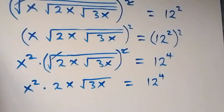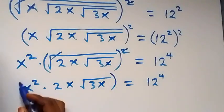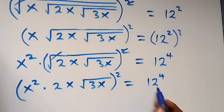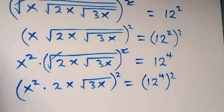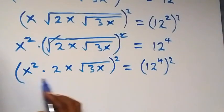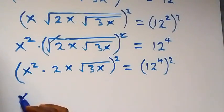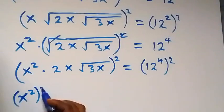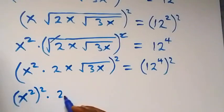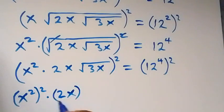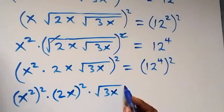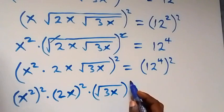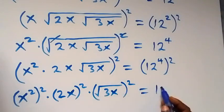The next step, we square both sides again — squaring everything on this side, and also squaring this side. The square will affect each term: first we have x squared, then squared, times 2x squared, then times square root of 3x, then times square root of 3x. This now equals 12 raised to power 8.